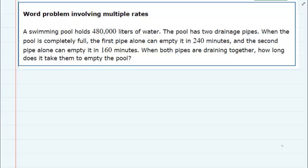We have a word problem here that says a swimming pool holds 480,000 liters of water and the pool has two drainage pipes. When the pool is completely full, the first pipe can empty it in 240 minutes and the second pipe can empty it in 160 minutes. When both pipes are draining together, how long does it take the pool to empty?